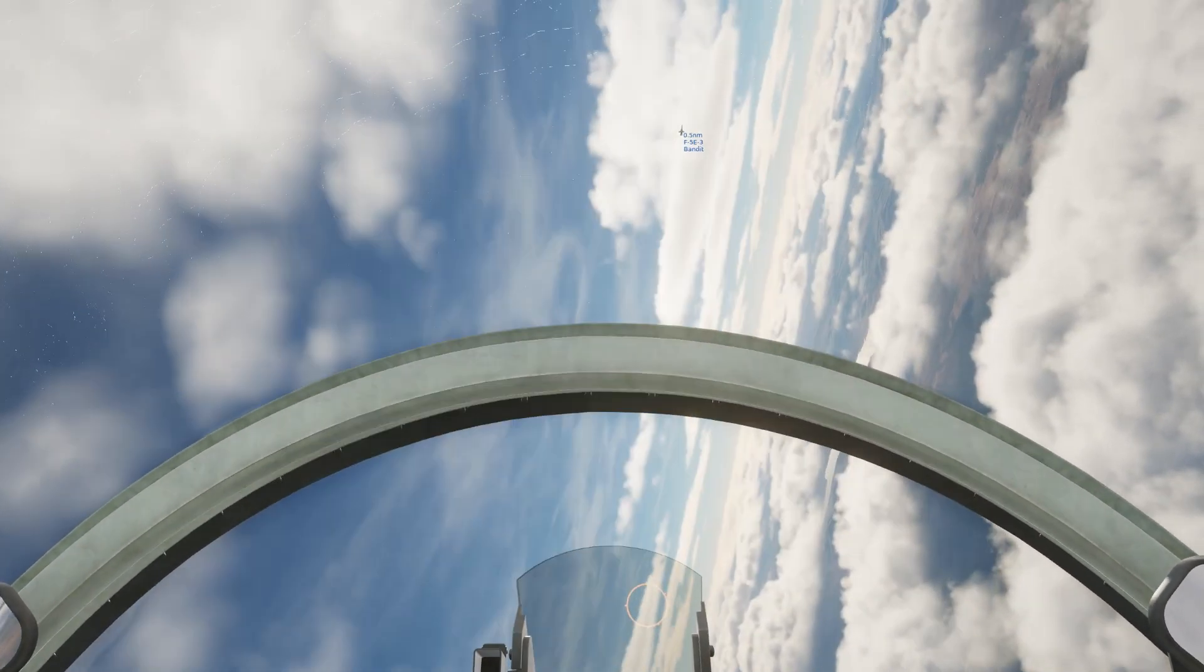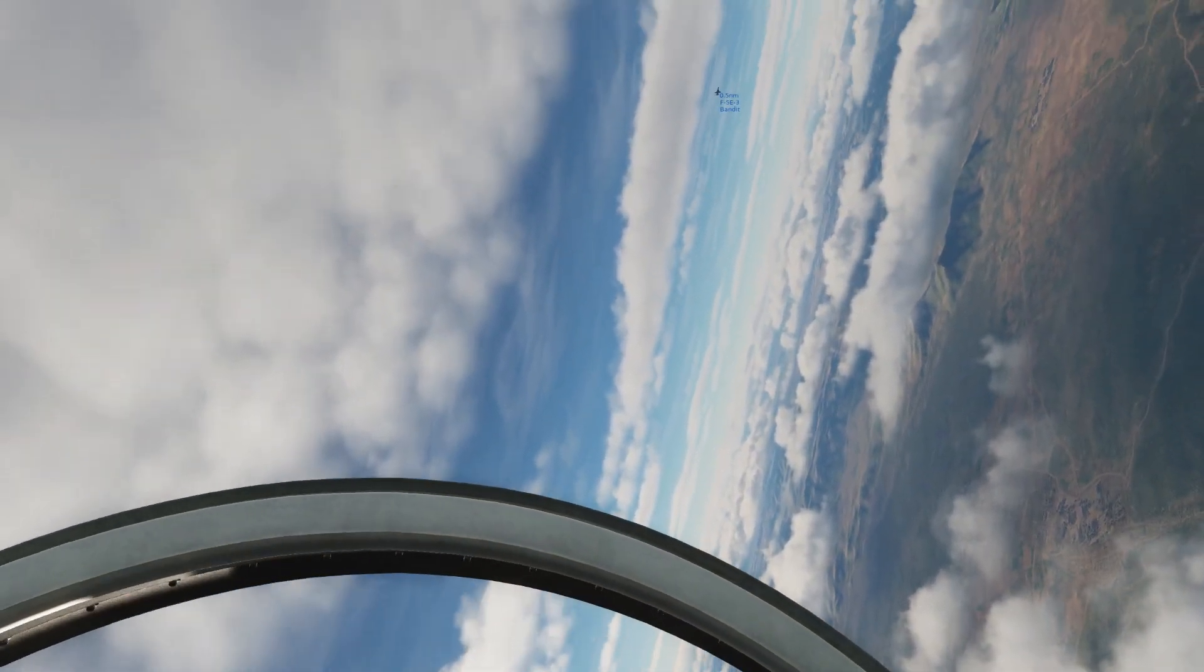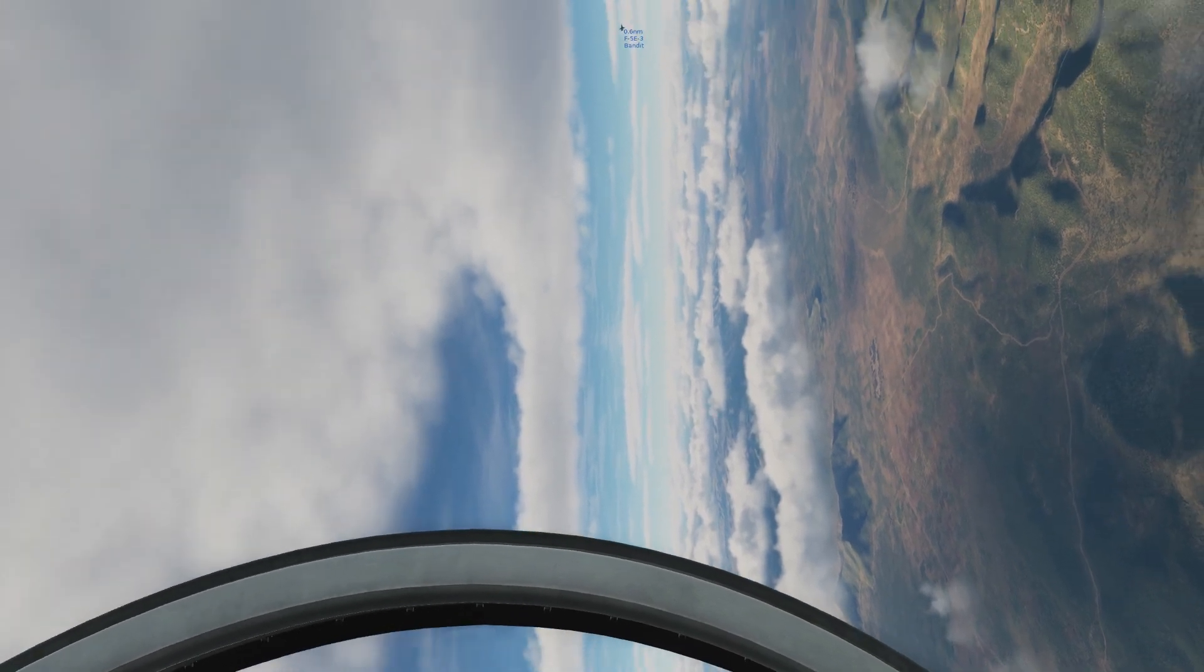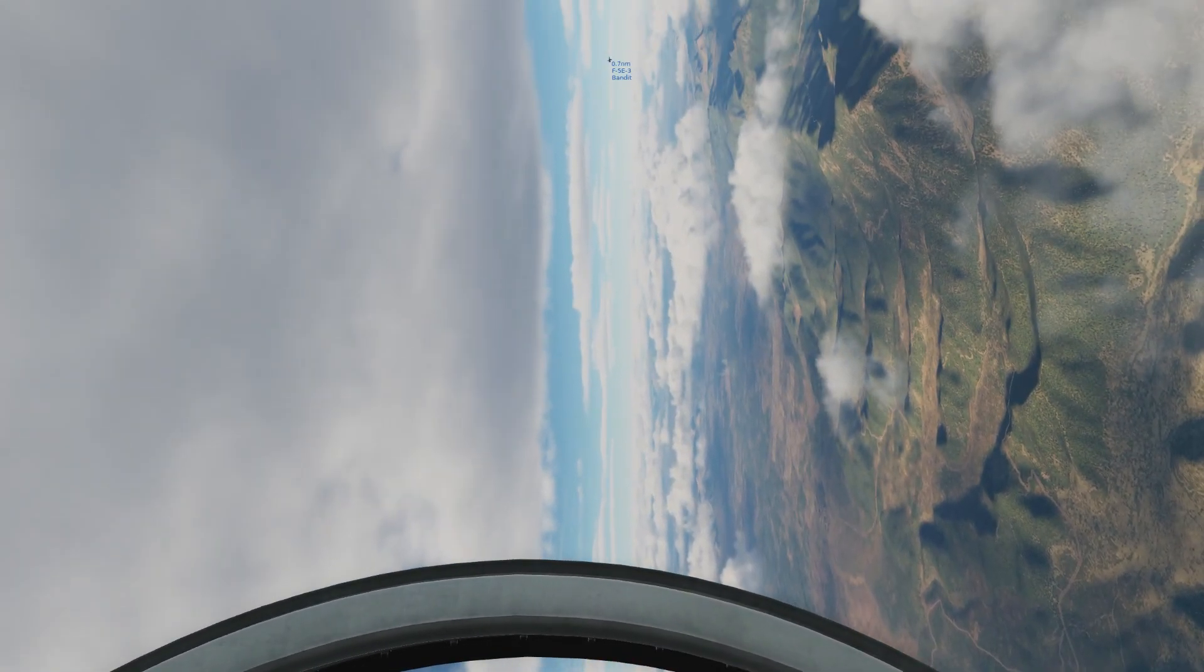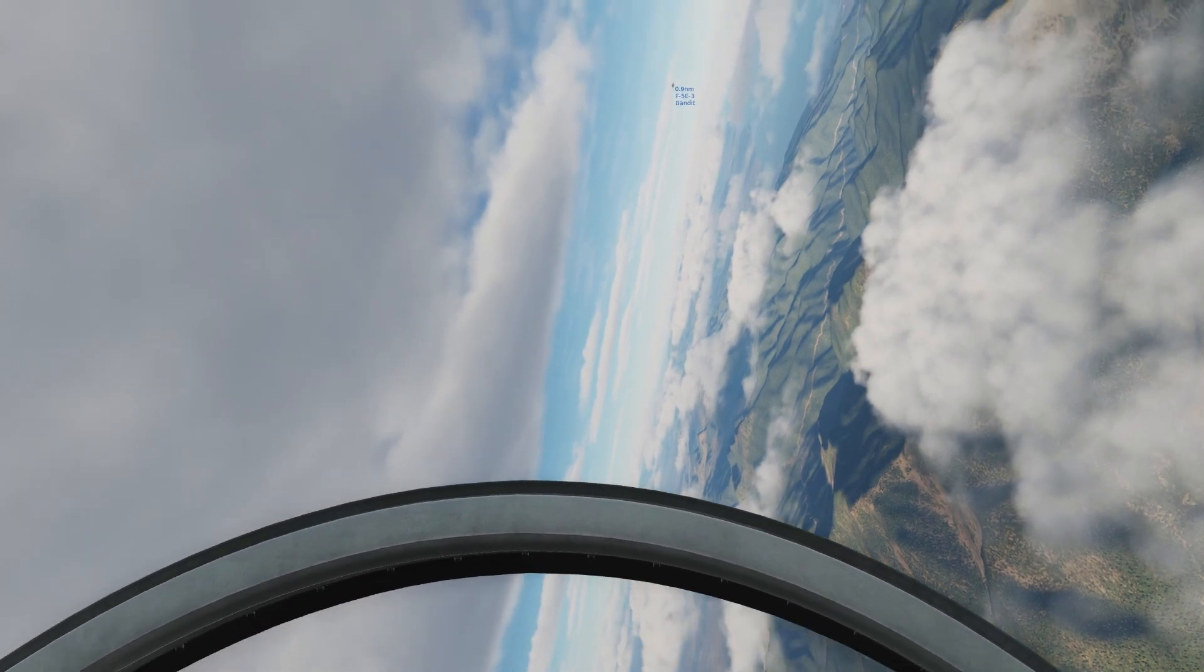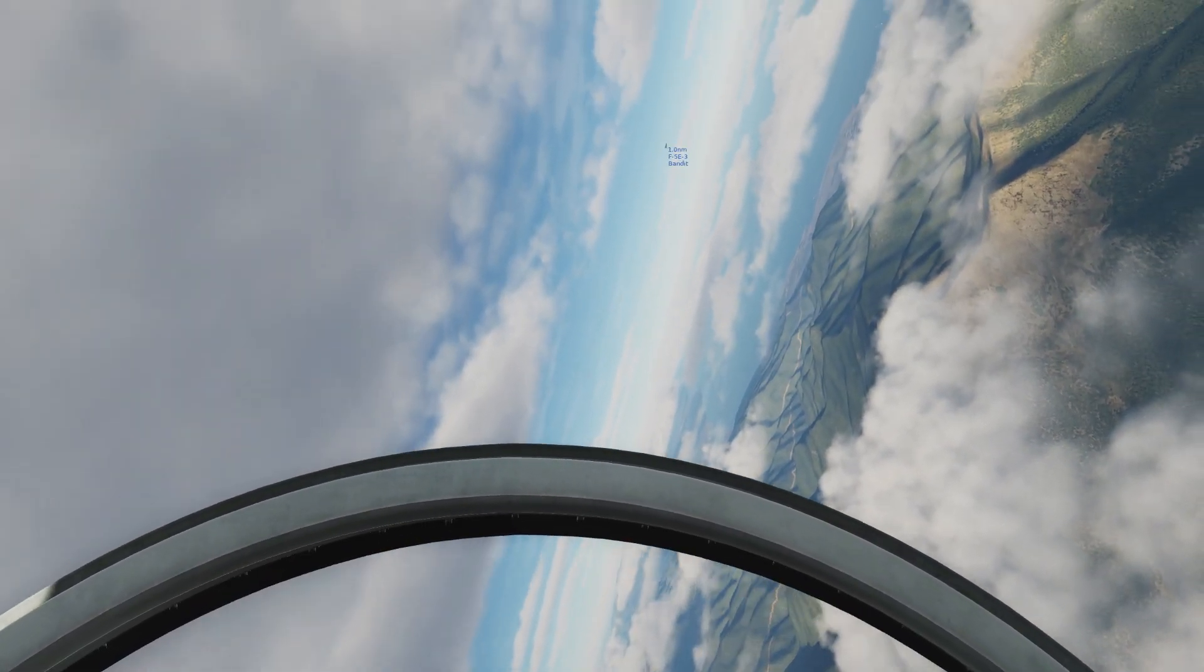Then we'll see the bandit drift back on our canopy and range will build up again. This is just like when we started the engagement, and if you go into lead or pure pursuit again, we'll repeat the process. The bandit would just keep yo-yoing like this indefinitely. So let's talk about why this is happening and how we can overcome it.